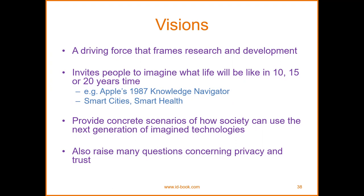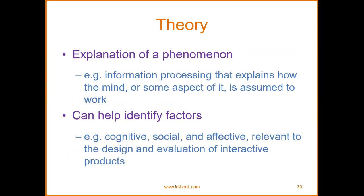For the theory part, there should be an explanation of phenomena. Information processing explains how the mind — or some aspect of it — is assumed to work, and can help identify cognitive, social, and affective factors relevant to the design and evaluation of interactive products. Cognitive aspects and emotions are very important, especially when we are looking at some designs.